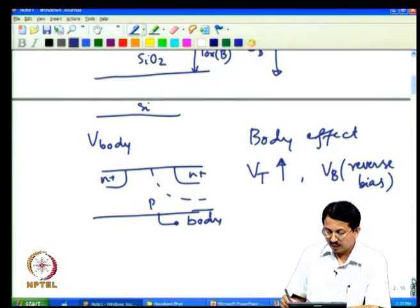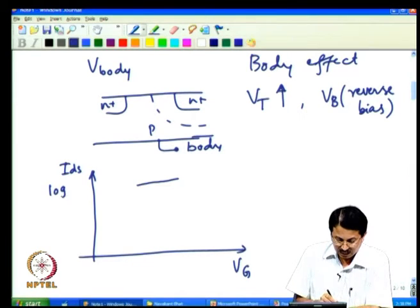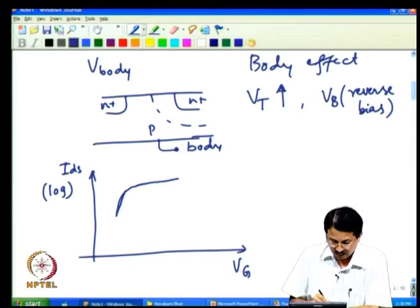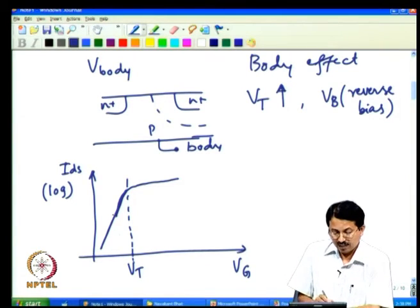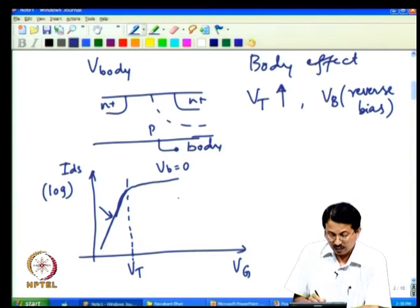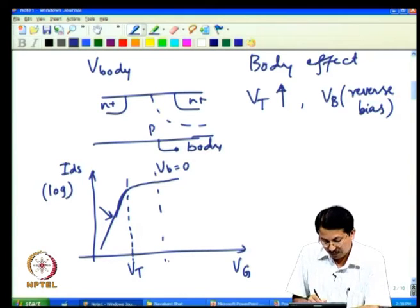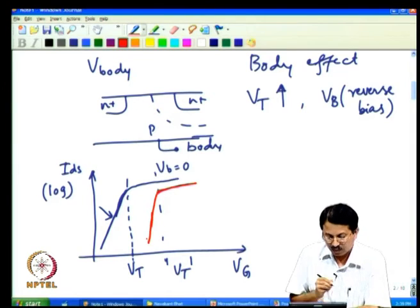Looking at the drain current versus gate voltage on a log scale: the sub-threshold slope at VB = 0 gives one characteristic. When VB is a non-zero reverse bias, two things happen: VT itself increases to a new VT prime, and in addition the sub-threshold slope becomes steeper.